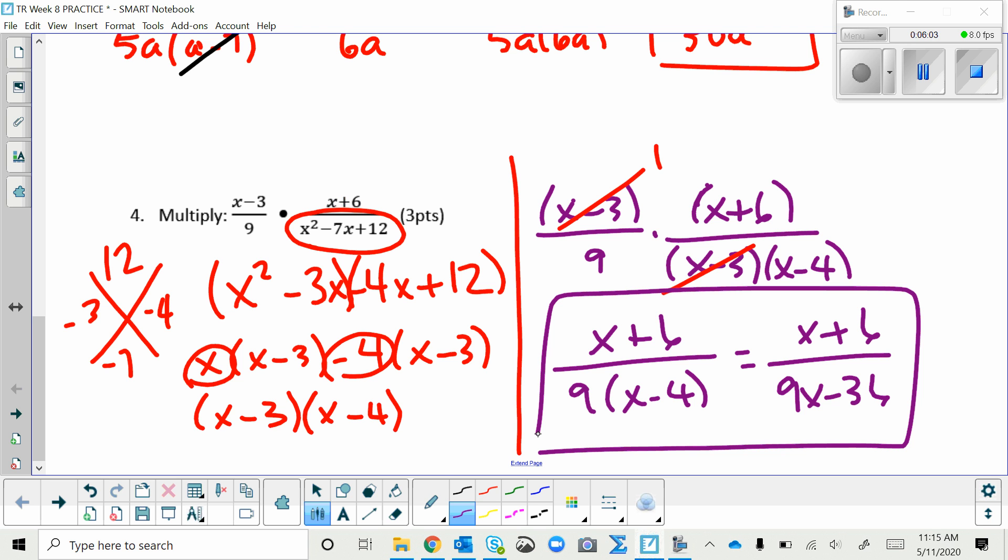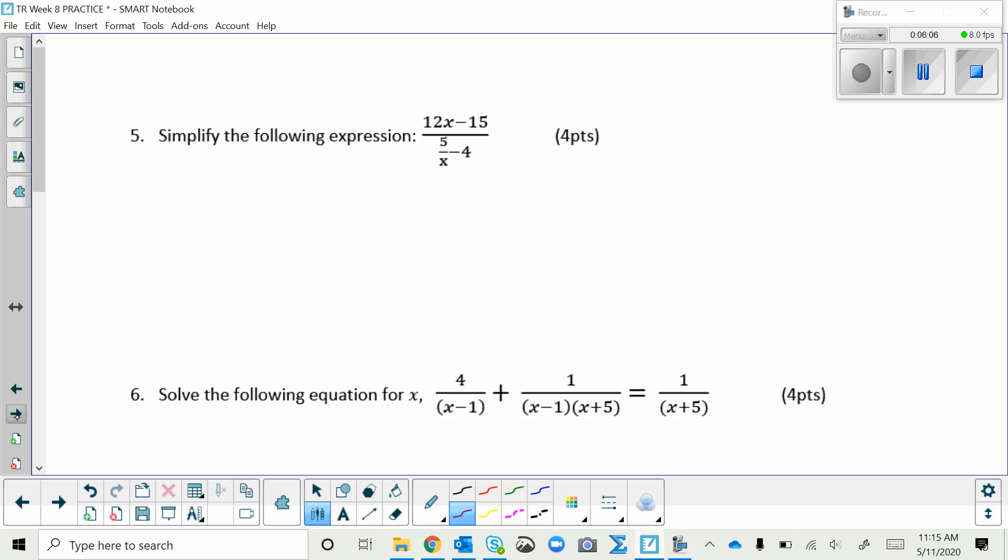All right, on the back. Remember the first thing we want to do is take this and get it as one fraction instead of two terms. So we need to make a common denominator of X. So that means multiplying the second fraction by X over X, the first fraction by 1 over 1.